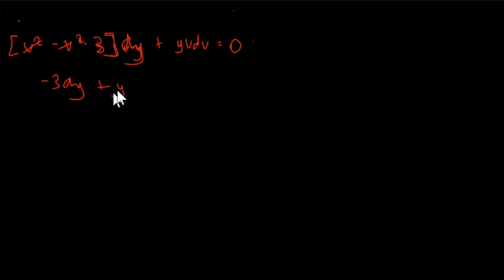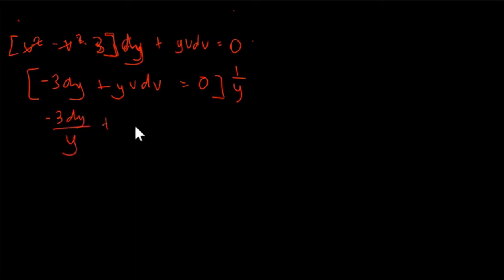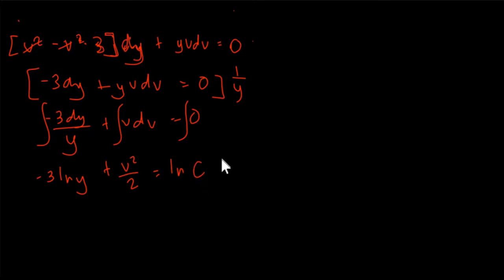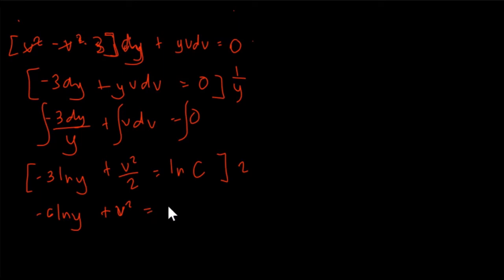We multiply both sides by 1/y, giving us −3·dy/y + v·dv = 0. Integrating each term: −3·ln(y) + v²/2 = ln(c). Multiplying both sides by 2, we end up with −6·ln(y) + v² = 2·ln(c), which we can write as −6·ln(y) + v² = ln(c²).